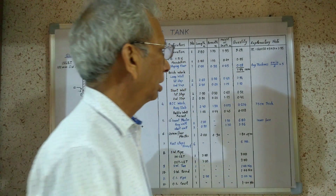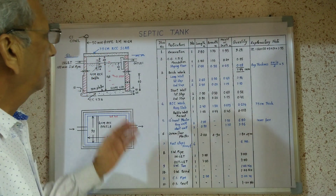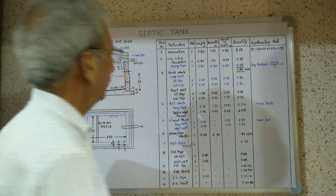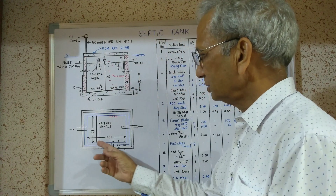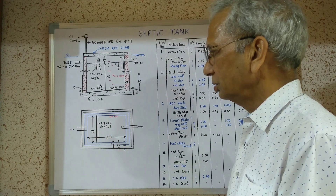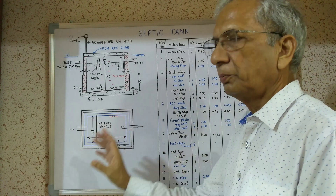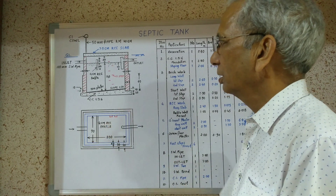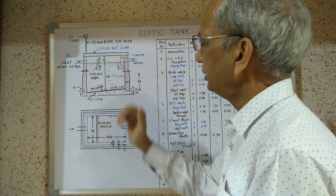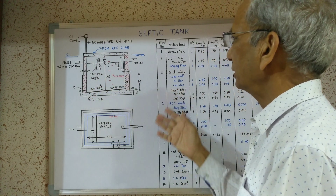Good morning students. Today we will discuss the calculations to find out the quantities of different items of a septic tank. We have a septic tank having size 2 meters long and 90 centimeters wide, for 25 people. We will discuss dimensions side by side as we calculate the quantity of different items.